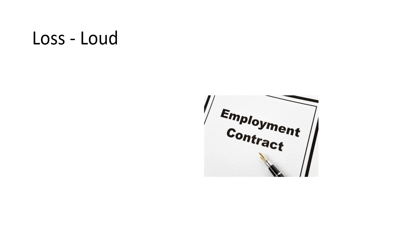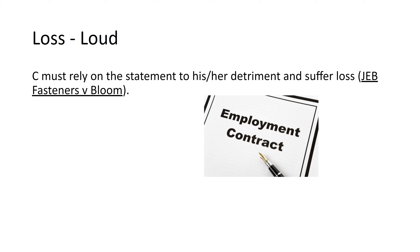The fourth element, L for 'Loud', stands for loss. You have to show that the claimant relies on the statement to their detriment and suffers loss. In JEP Fasteners v Bloom, the claimant couldn't show they relied on the accounts they had been shown, because they were going to buy the company anyway — they wanted the two employment contracts of the two directors. So they hadn't relied at all on the statement, which was a set of accounts. You have to show the claimant actually relied; usually you can show they went ahead and bought something and suffered loss because it turned out not to be worth as much as they thought.